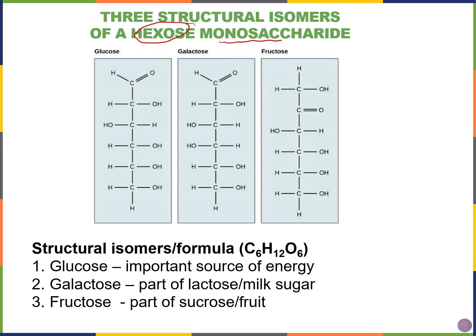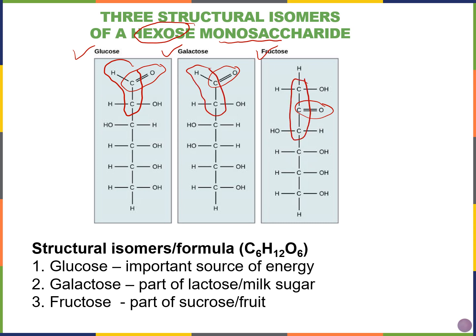Here are three very common hexose monosaccharides — all six-carbon chains. On the left is glucose, in the middle is galactose, and on the right is fructose. Glucose and galactose are aldoses; fructose is a ketose. These are all structural isomers — they share the chemical formula C6H12O6 but differ in atom arrangement. Glucose is a key energy source; galactose plus glucose form lactose (found in milk); and fructose plus glucose form sucrose.